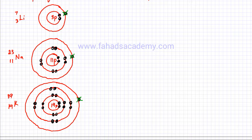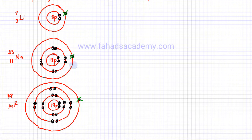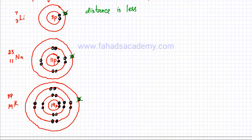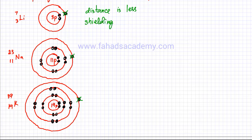For lithium, this electron is closest to the nucleus compared to all the other atoms. If you look at sodium it's further away, and for potassium it's even further away. So as you move down a group, the outer electron moves further and further from the nucleus. For lithium, the distance of the outer electron is less, and there is also less shielding because it's closer to the nucleus with fewer shells in between.